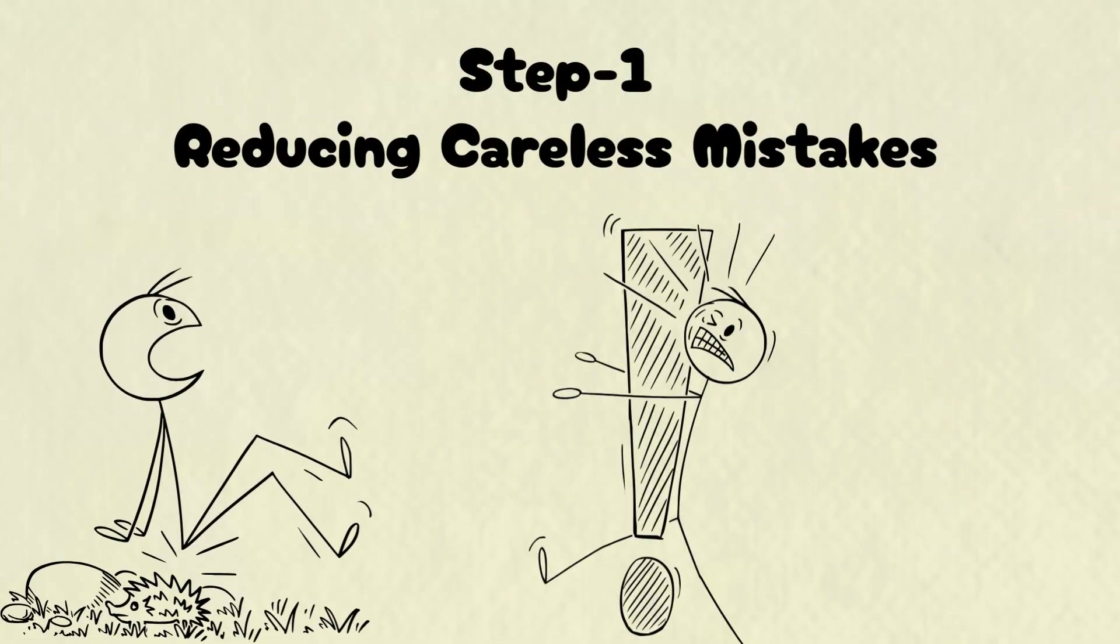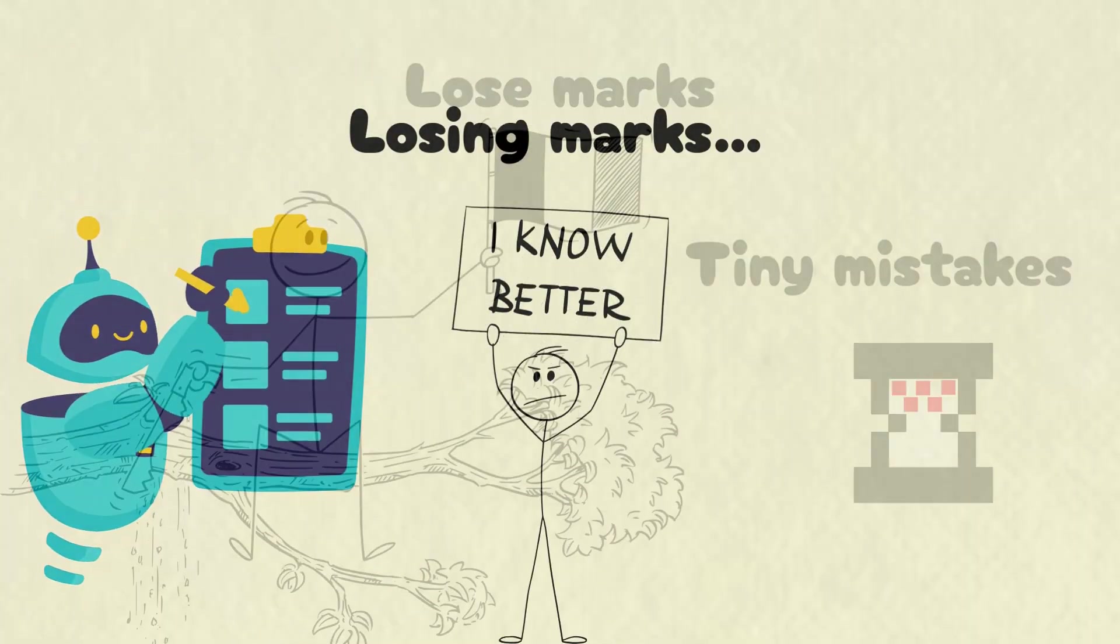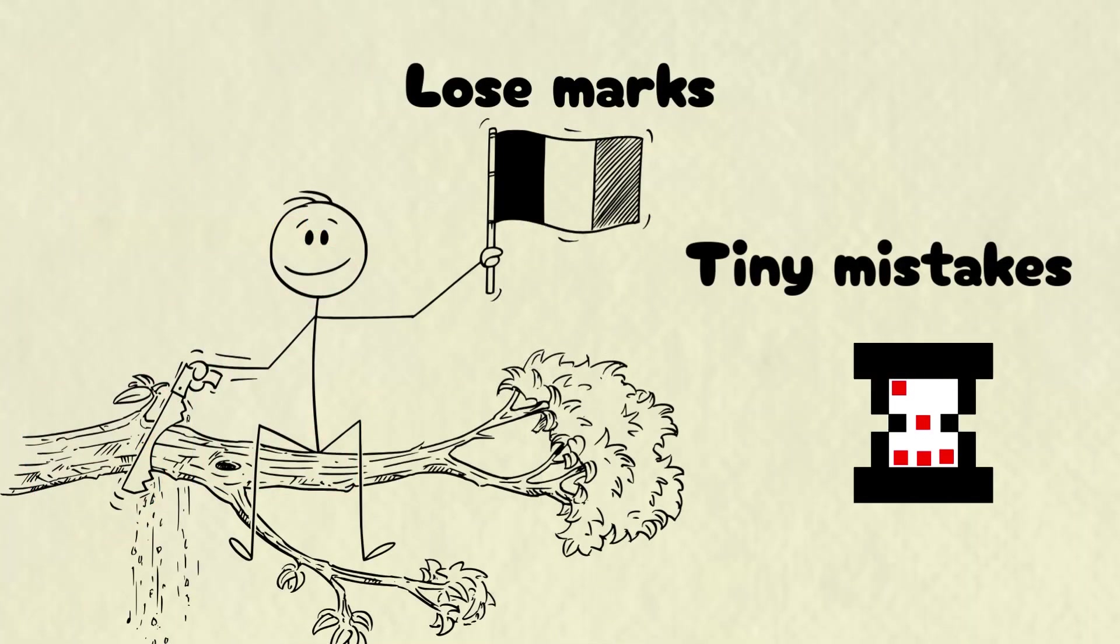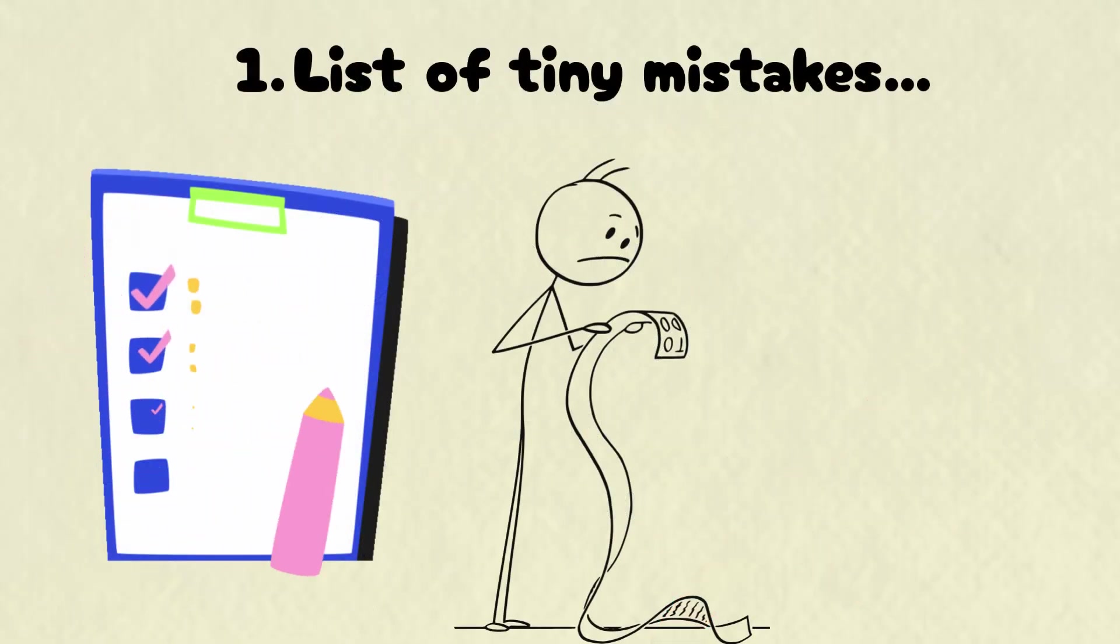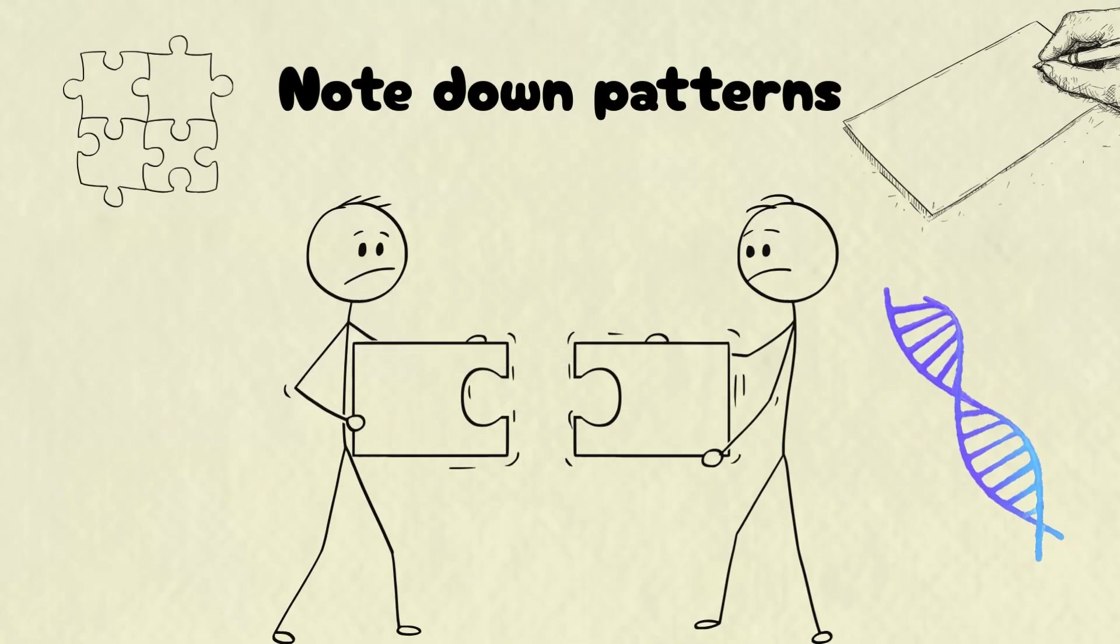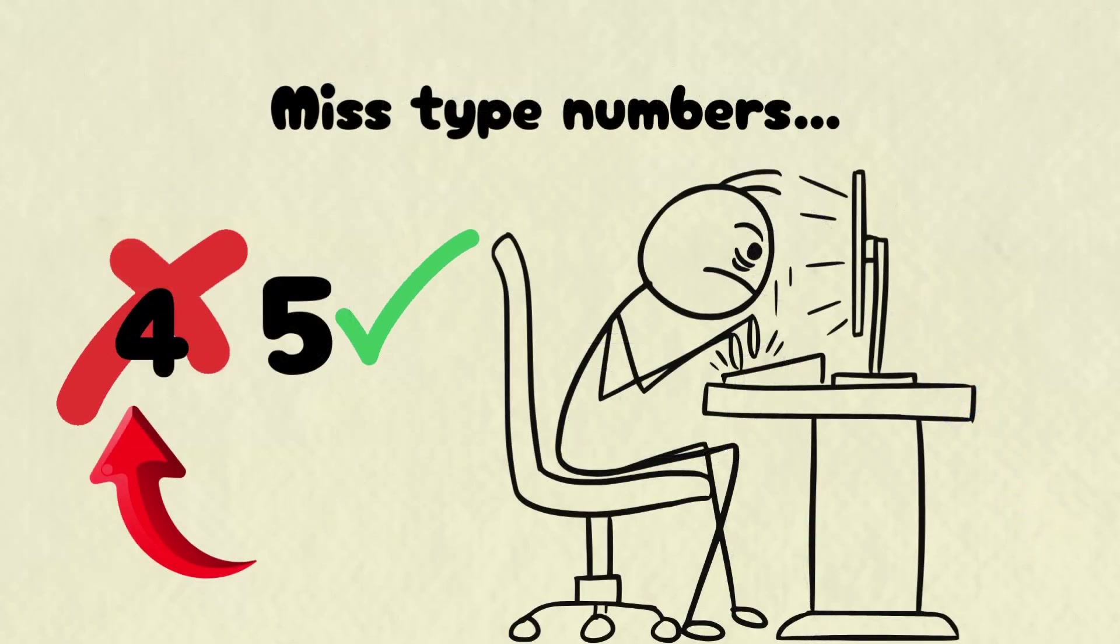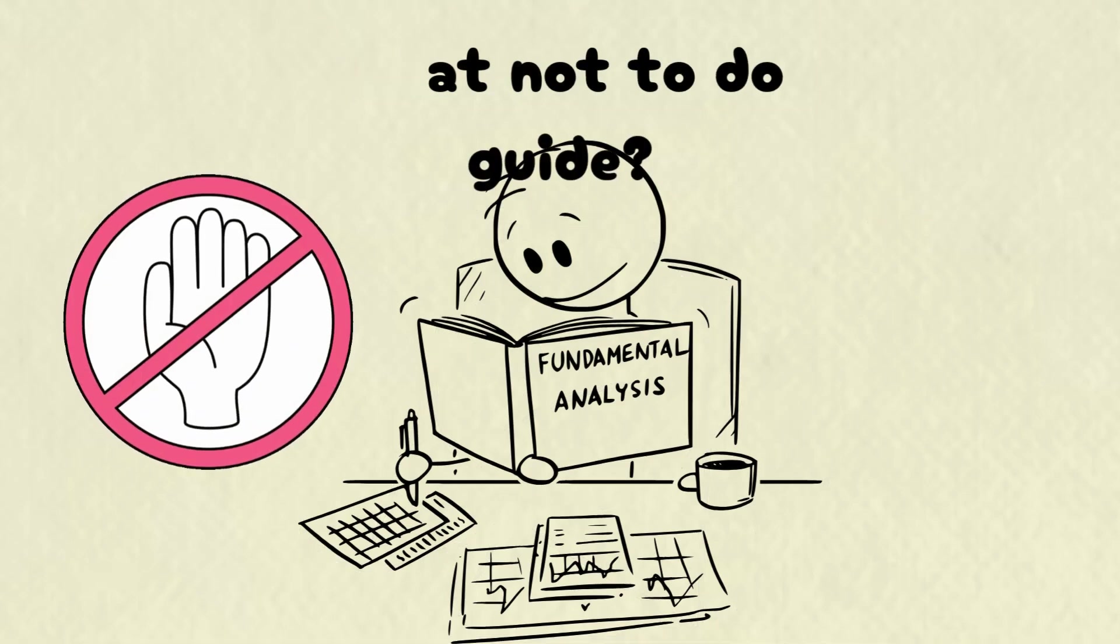Step one, reducing careless mistakes. Track your common errors. There's no point knowing everything if you're losing marks over tiny mistakes, like forgetting a minus sign in algebra. Keep a running list of these recurring slip-ups. Build your mistake profile. Note down patterns. Do you often mistype numbers? Skip units? Forget brackets? This list becomes your personal what-not-to-do guide.